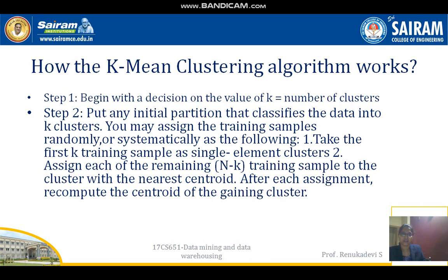The data in Euclidean space uses Euclidean distance to measure the quality of the clustering. The technique used is the sum of squared errors, abbreviated as SSE, which is also known as scatter. In other words, we calculate the error of each data point as its Euclidean distance from its cluster centroid, and perform the sum of squared errors computation.